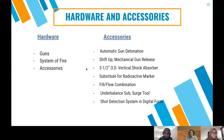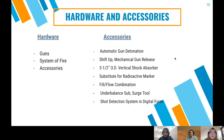For hardware and accessories: Guns are selected based on factors including hardware measurements for compression, desired function type, shot density and phasing, finishing data clearance requirements, and environmental conditions. The system also includes a firing system. Accessories include automatic gun detonation, shift-up mechanical gun release, 3.5-inch OD vertical shot observer, radioactive marker, field and flow combination, underbalanced sub search tool, and a shoot detection system in digital form.